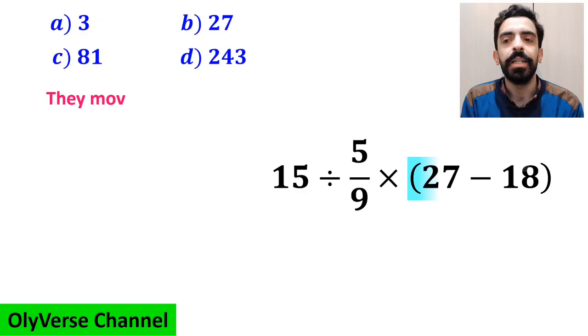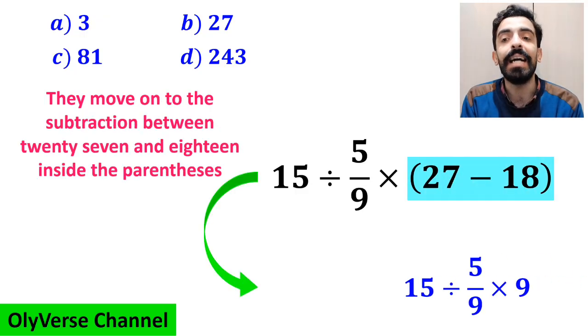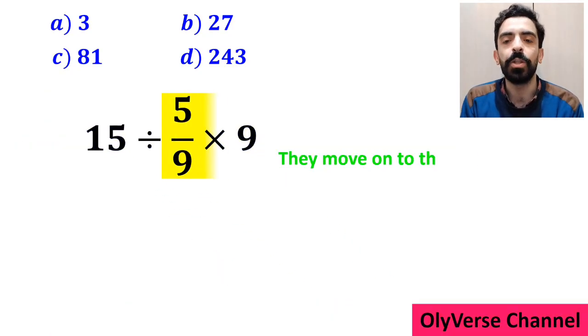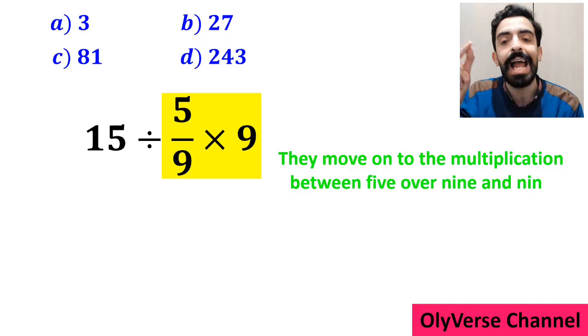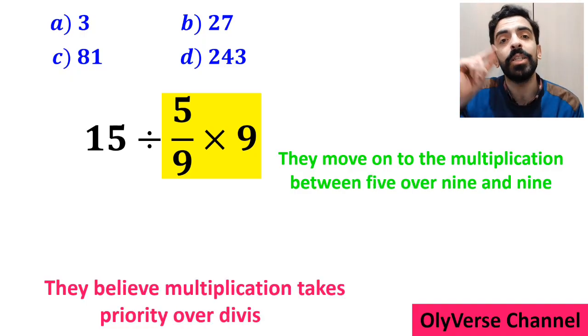And the next step they move on to the subtraction between 27 and 18 inside the parenthesis and simplify this expression to 15 divided by 5 over 9 times 9. Then they move on to the multiplication between 5 over 9 and 9 because they believe multiplication takes priority over division.